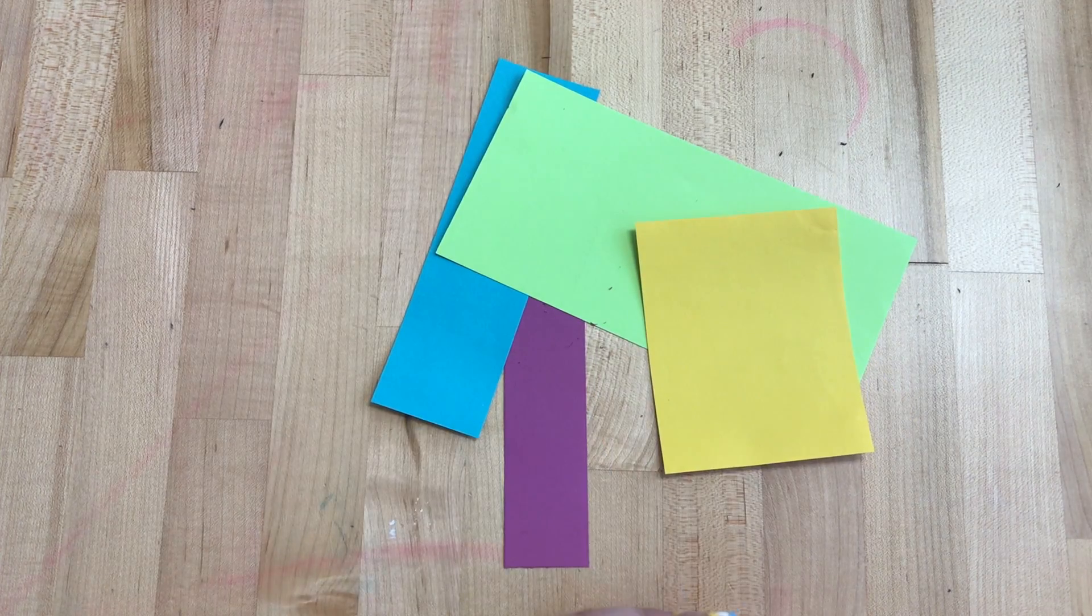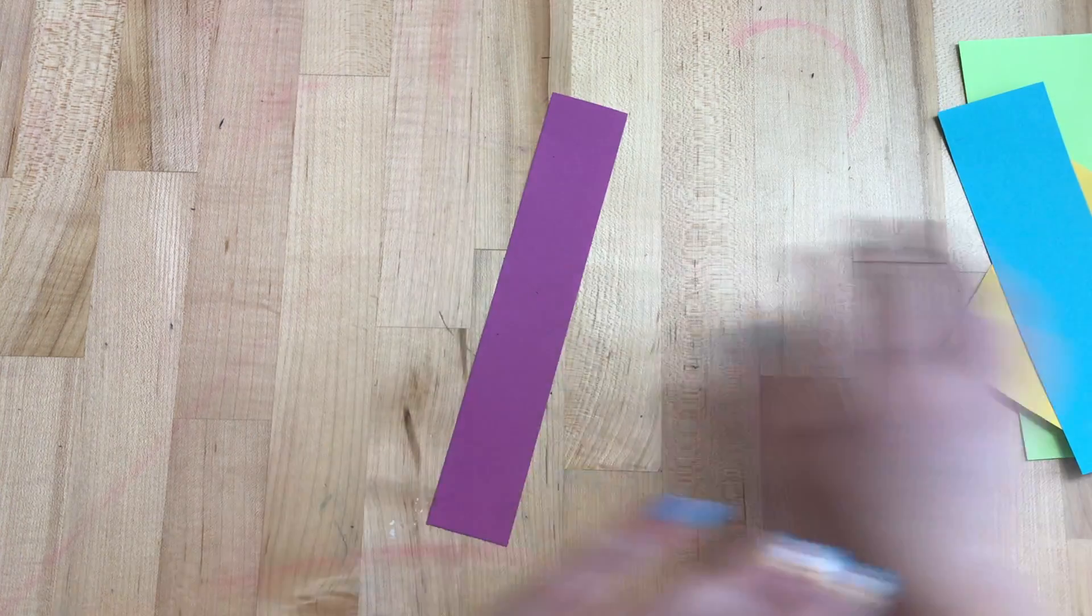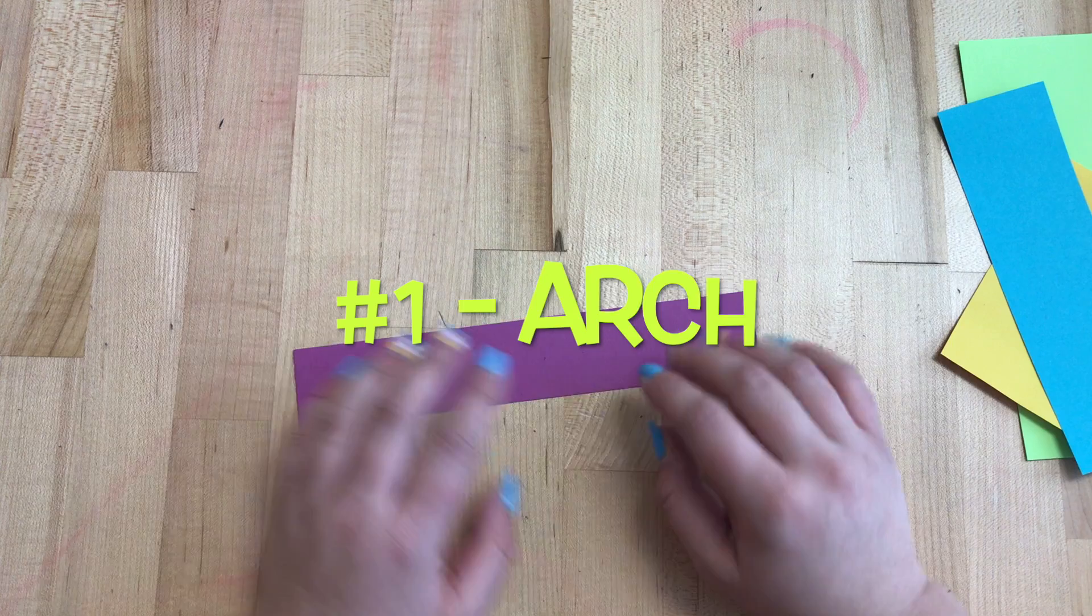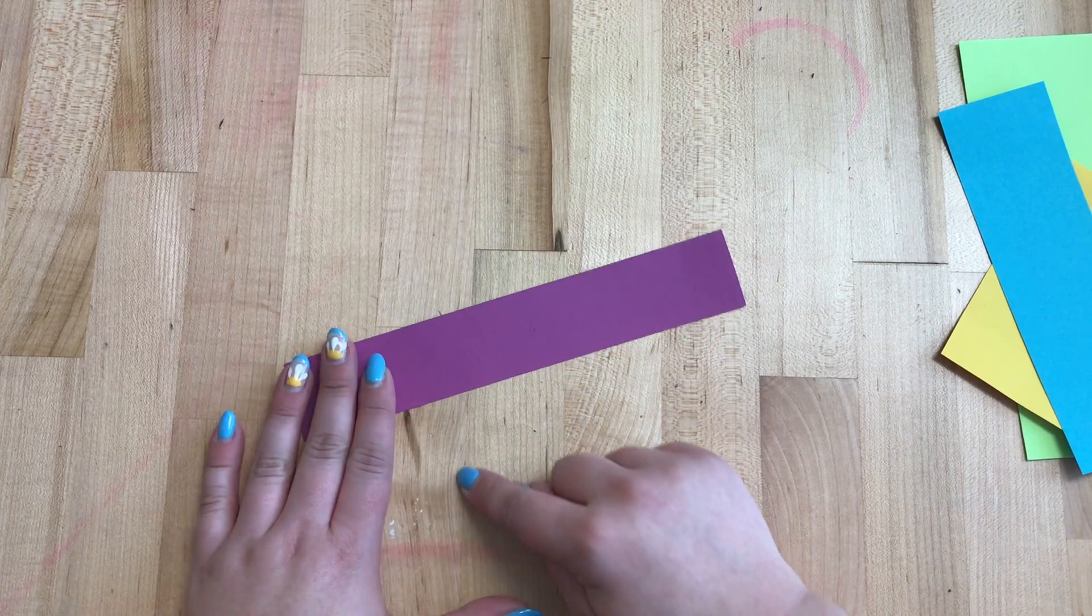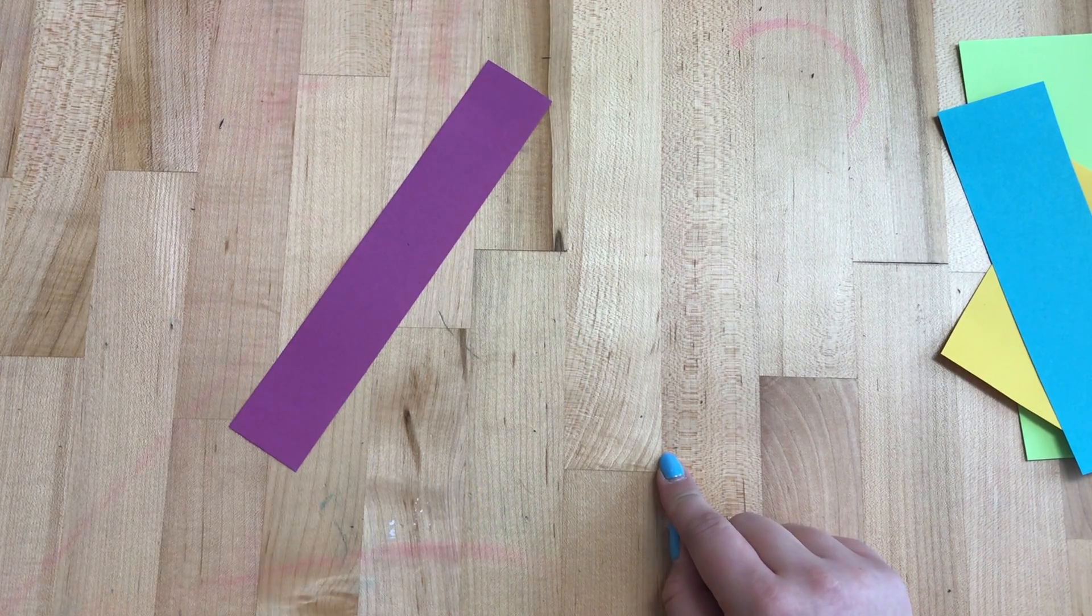What I'm going to go ahead and do is get the long piece of paper. It doesn't matter which one you use. We're going to learn about an arch. If you think about what an arch is, it's a shape that kind of goes over like that, kind of like a rainbow. That's an arch.